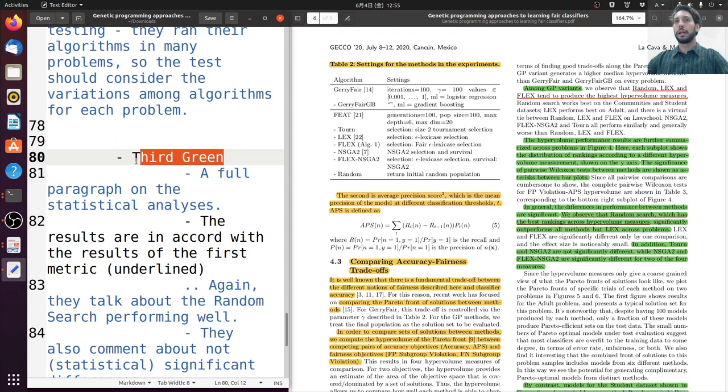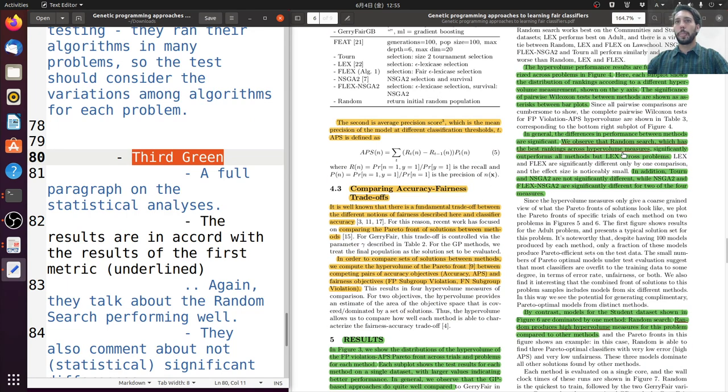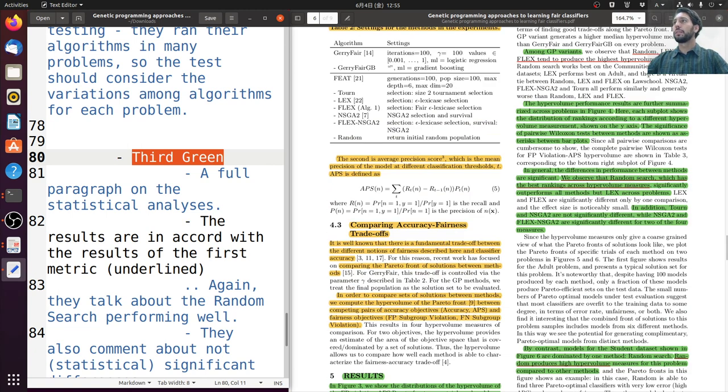Moving on to the next green highlighted area. Here. They gave a full paragraph just to describe the statistical analysis. The results are in accord with everything that we found before. Again, for example, we see that the random search has the best rankings across hyper volume metrics measurements. So connecting with the results they found before and with the explanation in the introduction and in abstract.